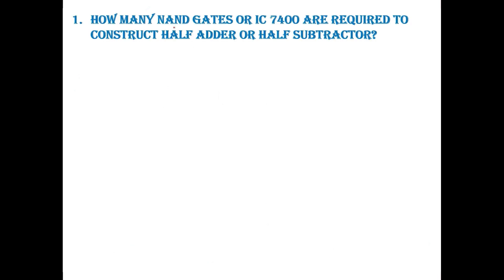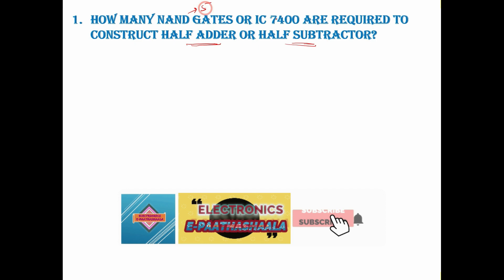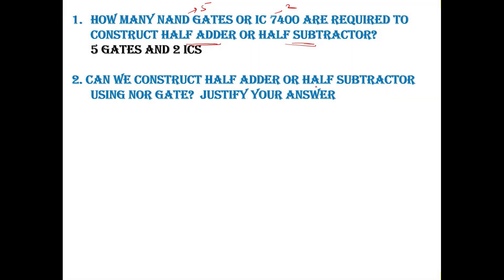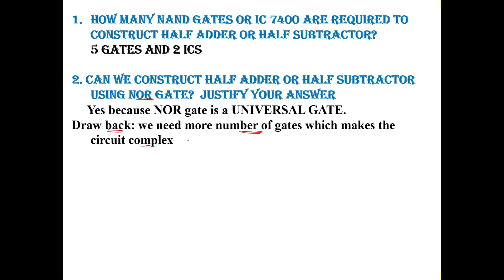This is the basic idea because it will help you to answer further questions. So the first question: How many NAND gates or ICs are required to construct half adder or half subtractor? Gates are 5, ICs is 2. This is the answer. Can we construct half adder and half subtractor using NOR gate? Justify your answer. The answer is yes, because NOR gate is also a universal gate. But the drawback is we need more number of gates which makes the circuit complex.